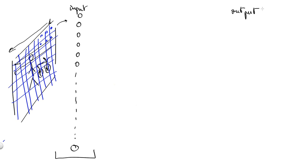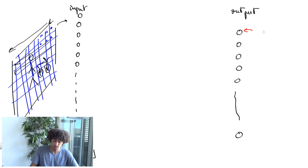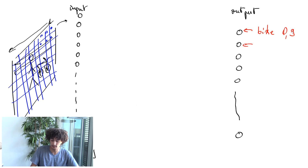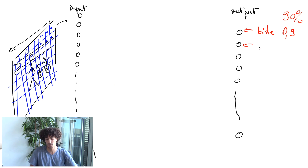What we want in the output is a set of answers, which could also be a list of values. Let's say that this one tells you how likely a bike is present in the image. So for example, if this output is 0.9, it means it's very likely — 90% chance that there is a bike in the picture.